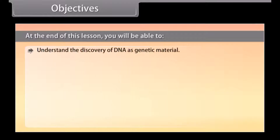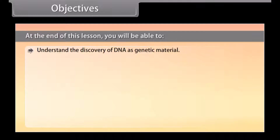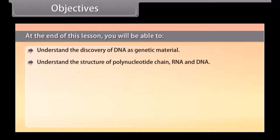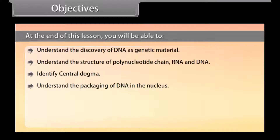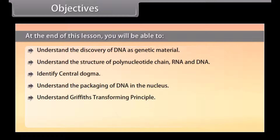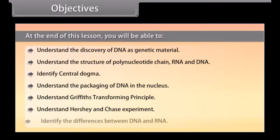At the end of this lesson you will be able to: understand the discovery of DNA as genetic material; understand the structure of a polynucleotide chain, RNA and DNA; identify the central dogma; understand the packaging of DNA in the nucleus; understand Griffith's transforming principle; understand the Hershey and Chase experiment; and identify the differences between DNA and RNA.